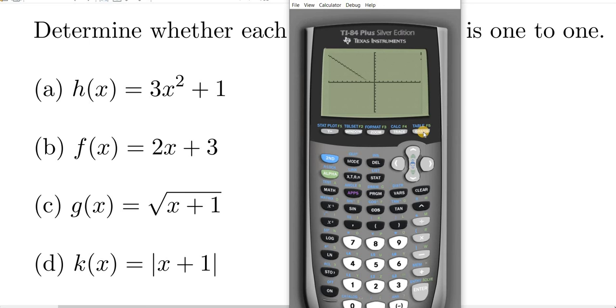And you can see, if you draw a horizontal line, it will cross more than once, so the answer to part D would be no, it is not one to one. I hope this video has been helpful. That's it.